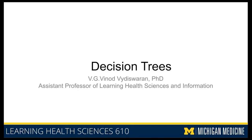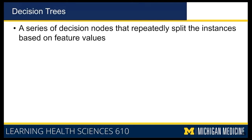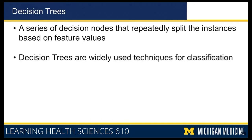We are going to talk about decision trees. This is one of the many videos we will have for individual supervised learning approaches. Decision trees are a series of decision nodes that repeatedly split the dataset into sub-units based on specific feature values. Once you make a decision you split the given data into smaller chunks, and you do that repeatedly.